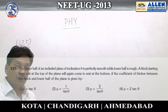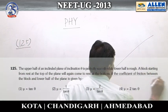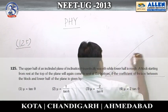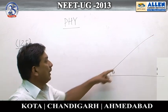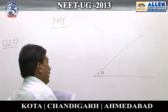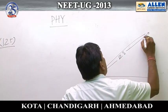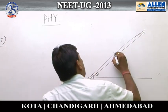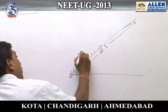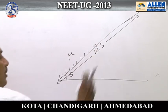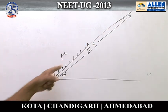Question number 125. In this question, we are given an inclined plane which is inclined at an angle theta. The total length of this inclined surface is 2s — half of the surface is rough having coefficient of friction mu, and this half surface is smooth. Total length of this inclined surface is 2s.